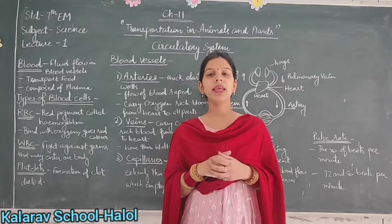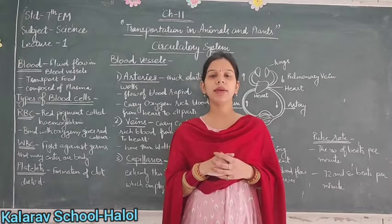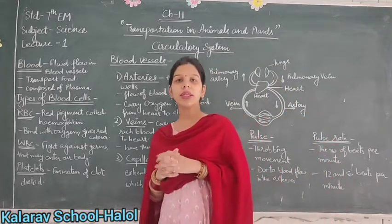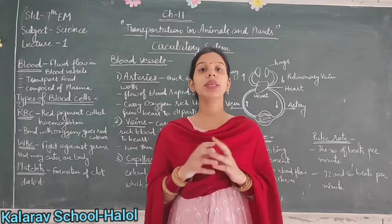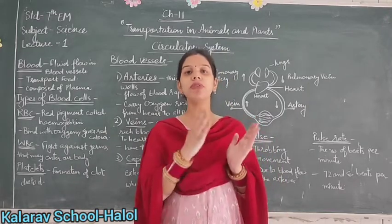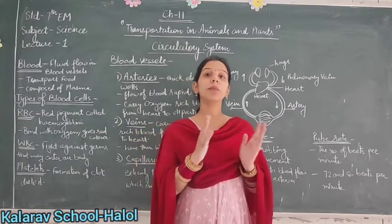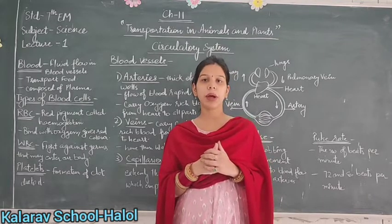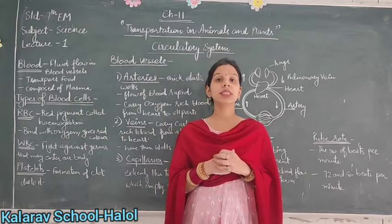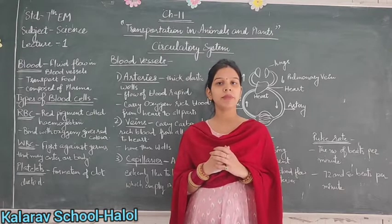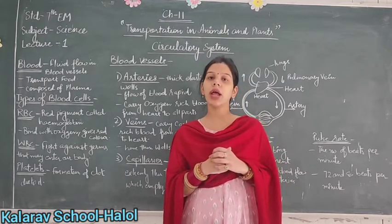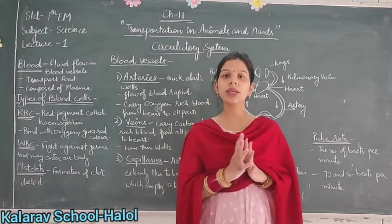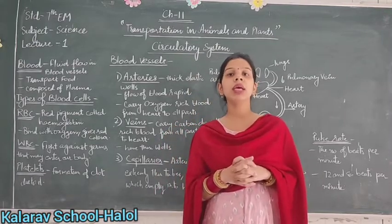Hello students, today we will study class 7th chapter 11, that is Transportation in Animals and Plants. All organisms need food for their survival, so food and different types of material need to be transported from one part of the body to another. We need a system which helps in this transportation, and in human beings this is done by the circulatory system. Today's lecture will discuss the circulatory system.